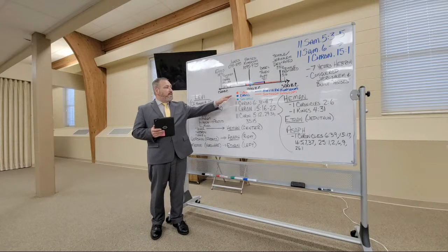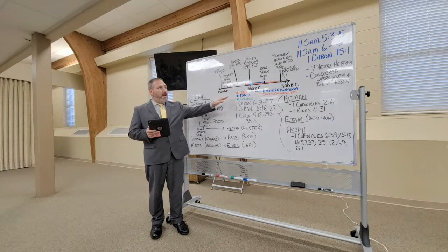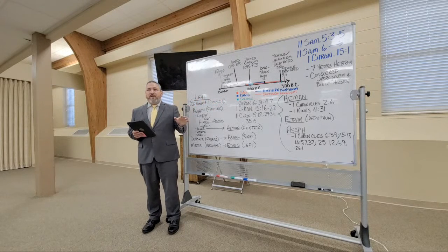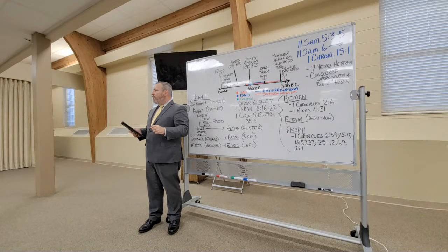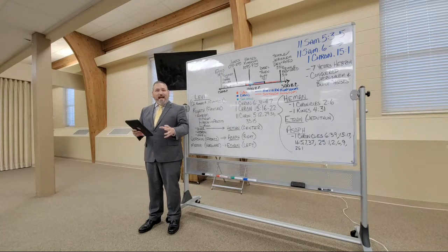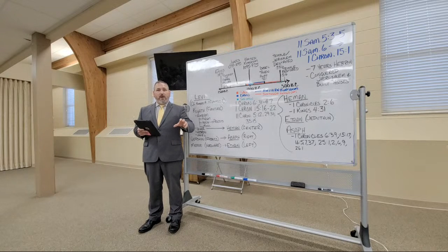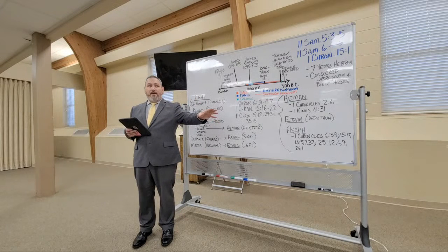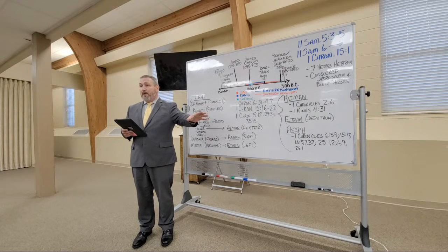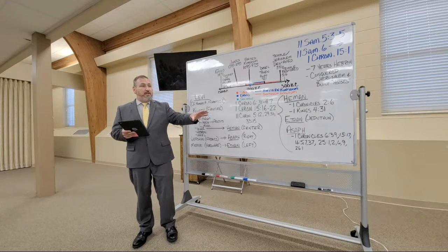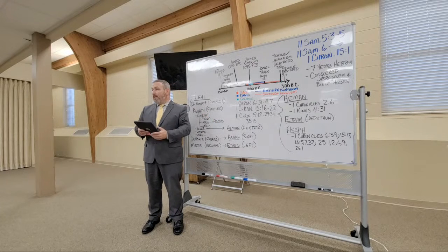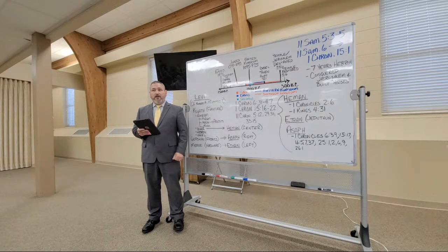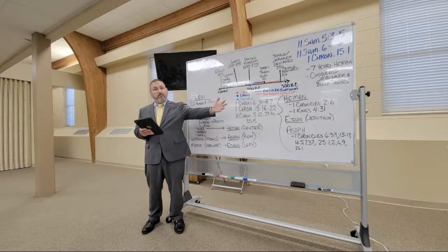So David then becomes king and when we go back to 2 Samuel chapter 5 verses 3 through 5, Samuel records there that David was recognized as king by Israel when he was 30 years old. Now remember that God had sent Samuel down to Bethlehem in 1 Samuel 16 to anoint David when David was but a boy. But it's not until he's 30 years old that he is recognized and accepted as the king of all Israel and he reigns for a period of 40 years from the time he's 30 until about 70 then.